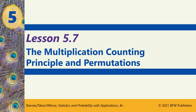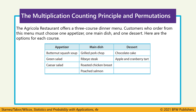Section 5.7: the multiplication counting principle and permutations. A local restaurant offers a three-course dinner menu where customers can choose one appetizer, one main dish, and one dessert from the options shown in this table. How many different meals can be ordered from this menu?